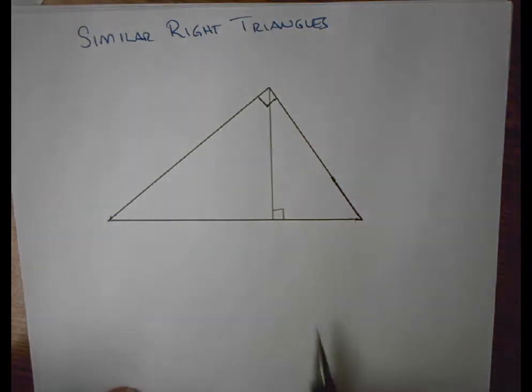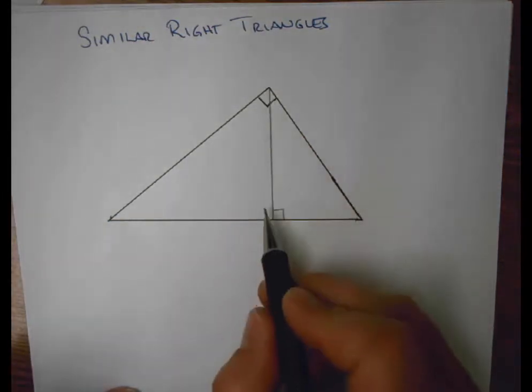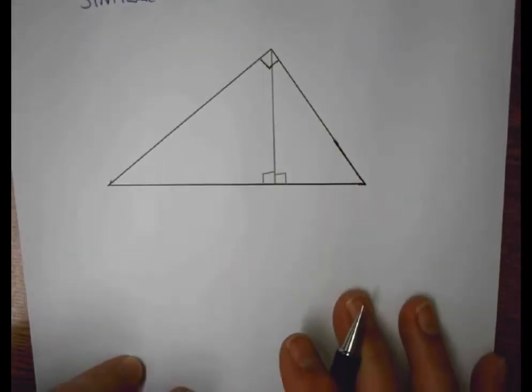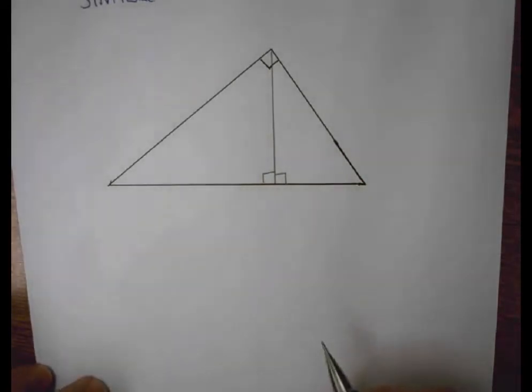I produce three triangles: baby bear, mama bear, and papa bear. And it turns out that all three of these triangles are, in fact, similar.